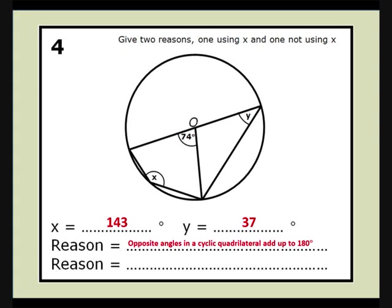Alternatively, y is half of 74 degrees, because we have the third of our arrowhead's disguises, the flag.